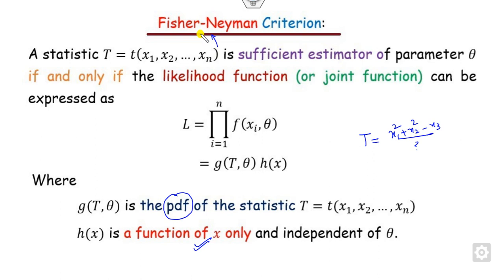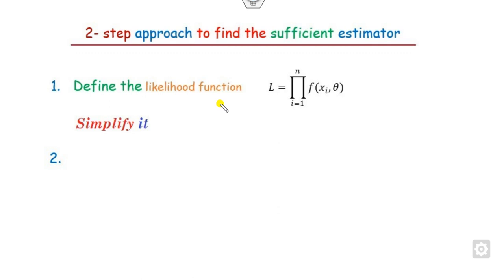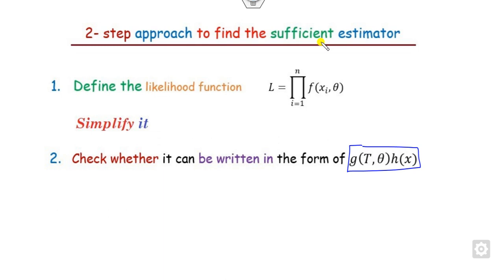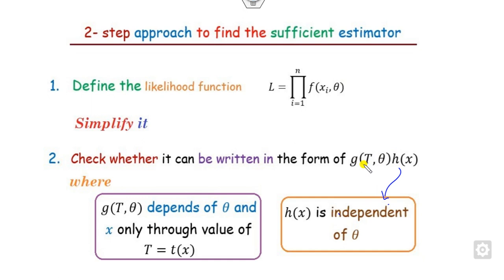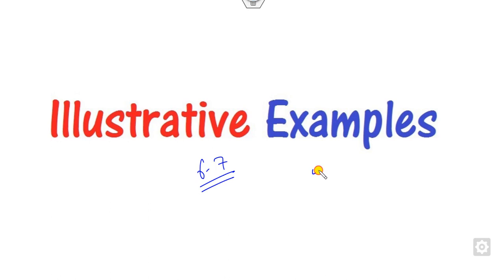For finding the sufficient estimator, I suggest a two-step approach. Start with the likelihood function L and simplify. If after simplification you are able to express it in the form g(T, theta) * h(x), where h(x) is independent of theta and g depends on theta as well as x, then the function of x inside g is the sufficient estimator.